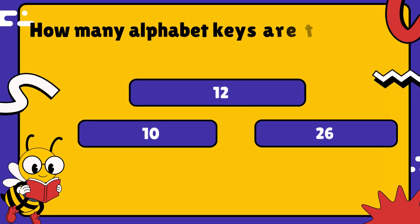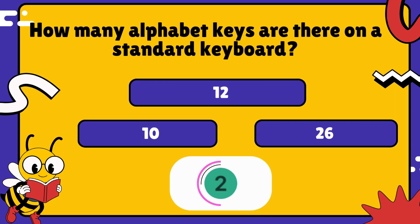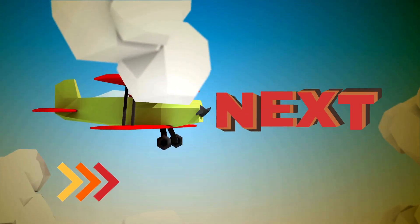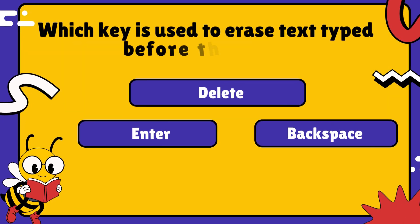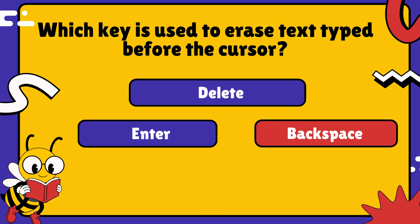How many alphabet keys are there on a standard keyboard? Well done! The answer is 26. Which key is used to erase text typed before the cursor? You got it — backspace key!